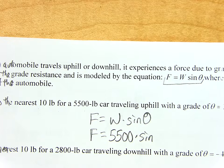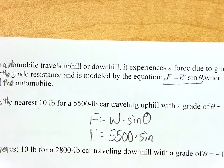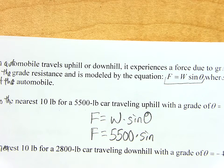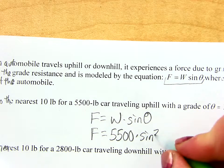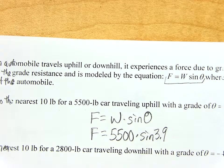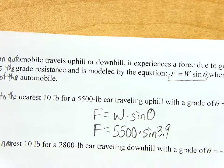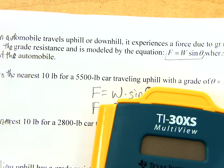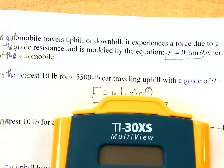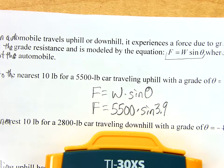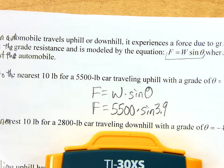No, that's what I'm solving for, so that's just going to stay F. Do I know the weight? What is it? 5,500 times the sine. Remember, theta is the grade. Didn't they tell me what the grade was? 3.9. So all I have to do is type this into Mr. Calculator, and I'm good to go.